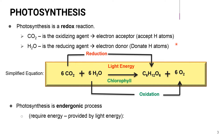Water is the reducing agent — it is the electron donor which donates hydrogen atoms. Thus, in a redox reaction, in a simplified equation, this is what the equation looks like. We can see that photosynthesis is an endergonic process because it requires energy, and this energy is kept as chemical energy provided by light energy.